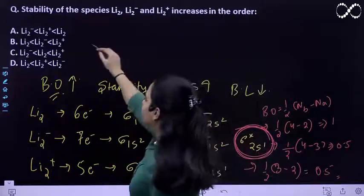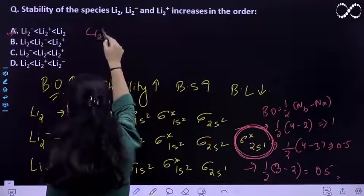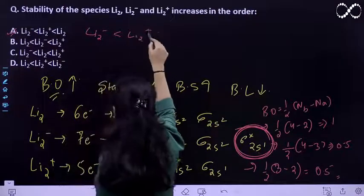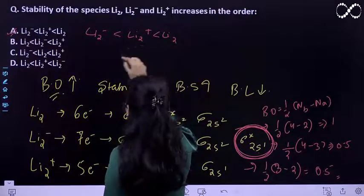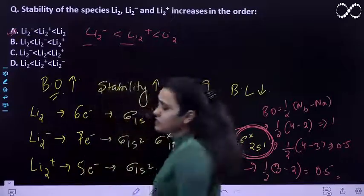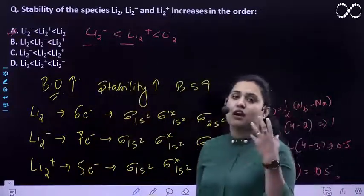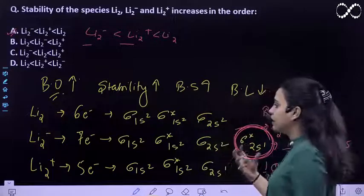So the order should be option A: Li₂⁻, Li₂⁺, Li₂. Although the bond order of both of these is the same, 0.5, the matter here is...